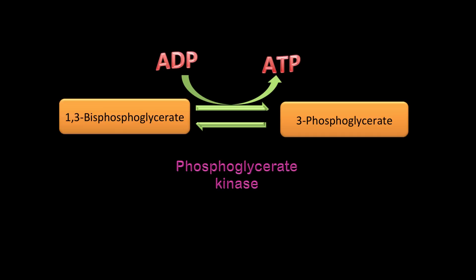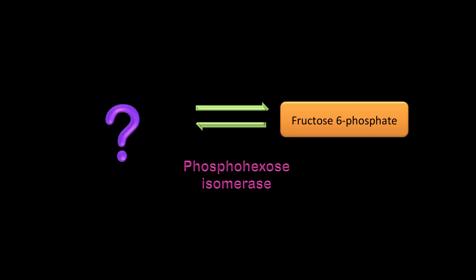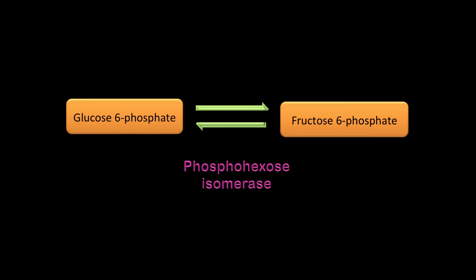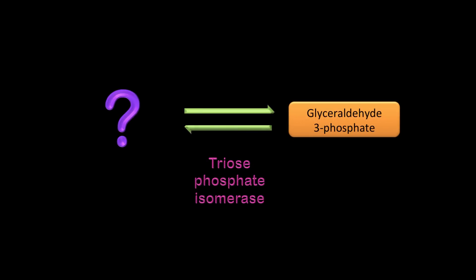Moving on: phosphohexose isomerase — some of you may know it as phosphoglucose isomerase — has fructose-6-phosphate as its product. What is the substrate? That's right: you are converting an aldose to a ketose. In this case you're converting glucose-6-phosphate to the ketose fructose-6-phosphate.